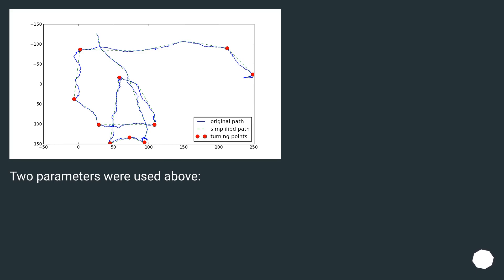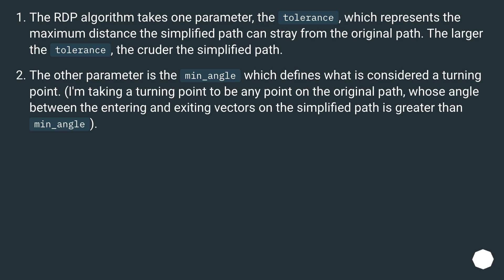Two parameters were used above. The RDP algorithm takes one parameter, the tolerance, which represents the maximum distance the simplified path can stray from the original path. The larger the tolerance, the cruder the simplified path.